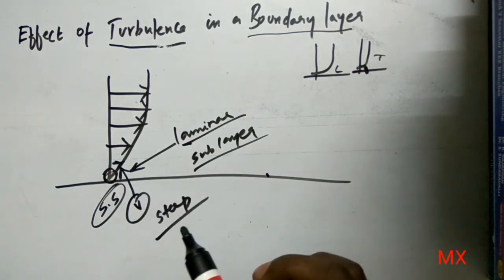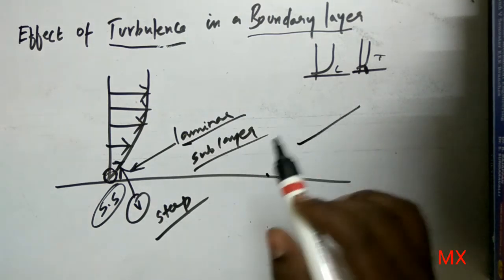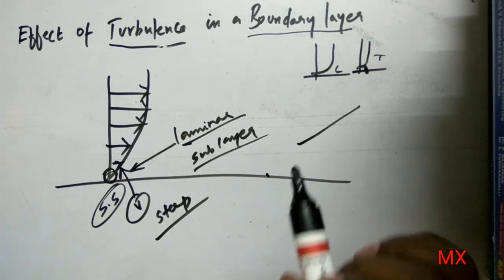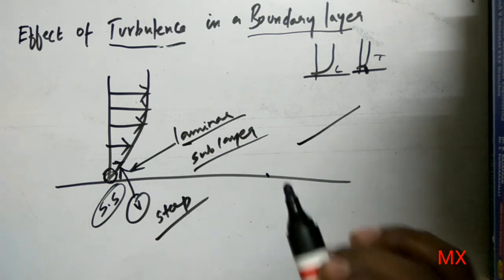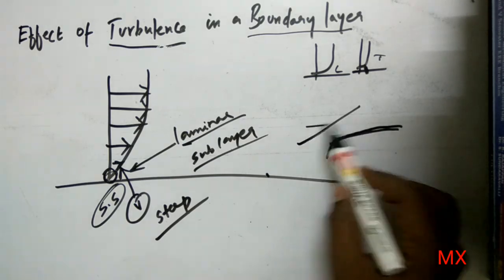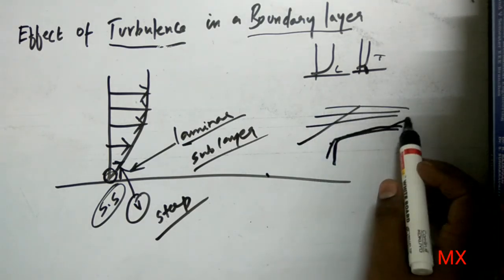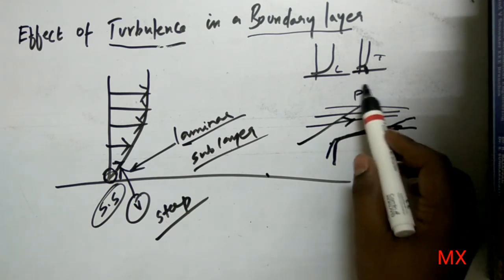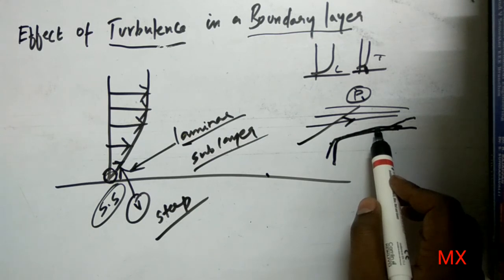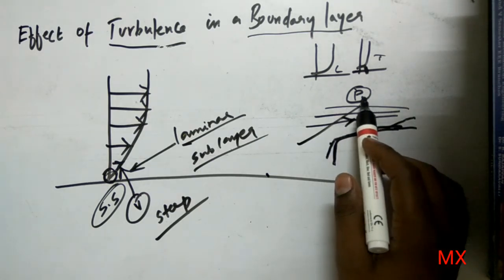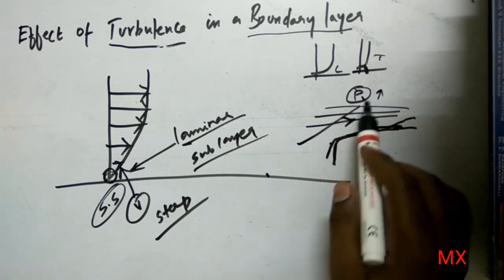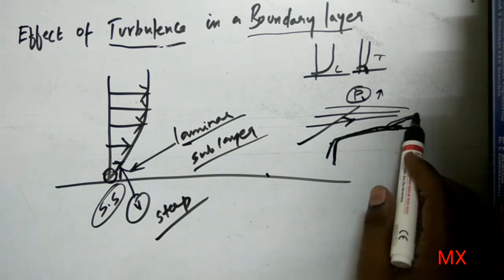The growth rate of the boundary layer increases, and this increase in momentum transfer is very important. If the growth of the boundary layer increases, an increase in momentum transfer will result. Consider an object where the boundary layer grows and the free stream flows — if the boundary layer is being increased, the momentum transfer in the free stream should be increased, because the momentum transfer from the free stream is what increases the boundary layer. The turbulence makes the momentum of the free stream to be increased, and as a result the boundary layer increases.